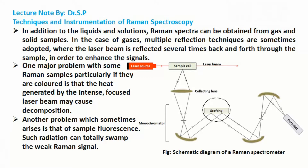One major problem with some Raman samples, particularly if they are colored, is that the heat generated by the intense focused laser beam may cause decomposition. Another problem which sometimes arises is that of sample fluorescence. Such radiation can totally swamp the weak Raman signal.